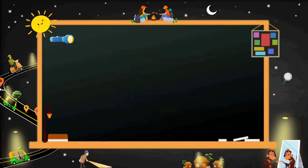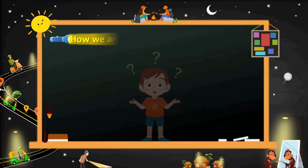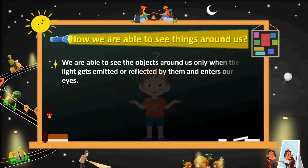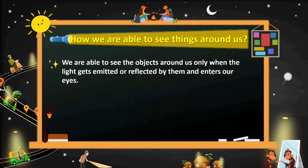Now let's talk about how we are able to see things around us. We are able to see the objects around us only when the light gets emitted or reflected by them and enters directly into our eyes.